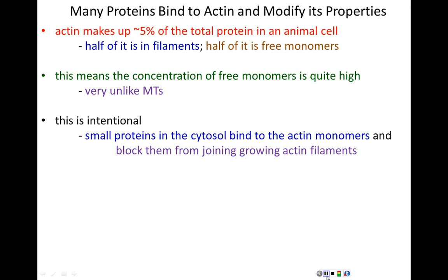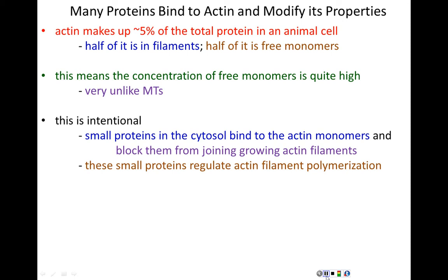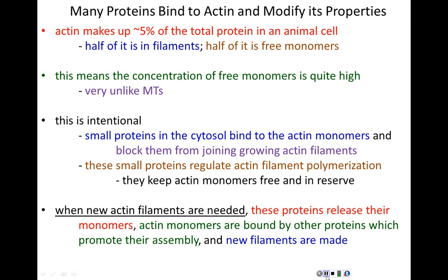There are accessory proteins in the cytosol that bind to actin monomers and keep them from joining growing actin filaments. These small proteins regulate actin filament polymerization by stopping free actin from joining a growing filament. They keep actin monomers free in reserve so that when new actin is needed, it can be easily assembled. When new actin filaments are needed, these accessory proteins release their monomers, the actin monomers are free to assemble into filaments, and new filaments are made.